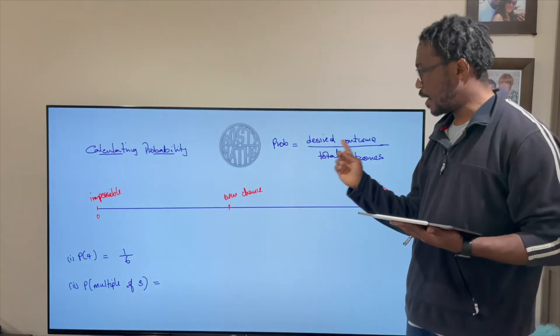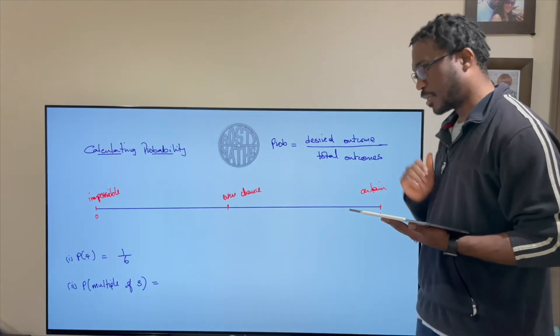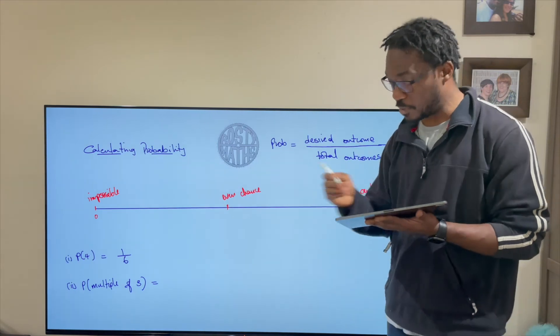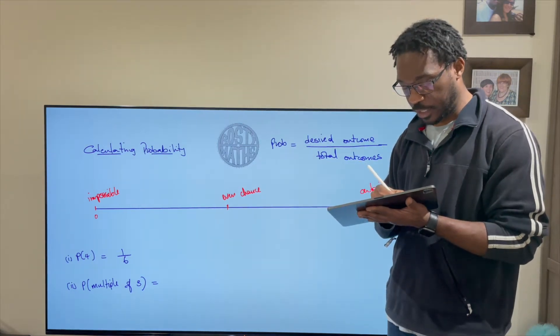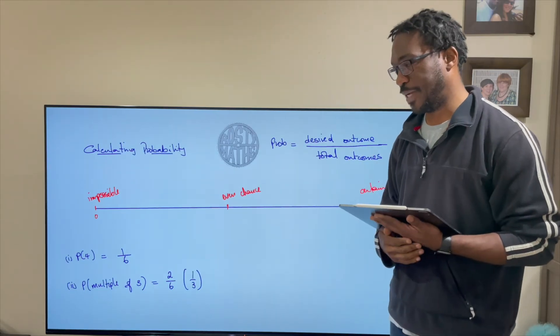So when I go to my desired outcome there are two multiples of three that's what I'm looking for. Total outcome that's going to be six. So therefore the probability of a multiple of three would be two out of six. You can simplify this as one third if you like but it's good just the way it is.